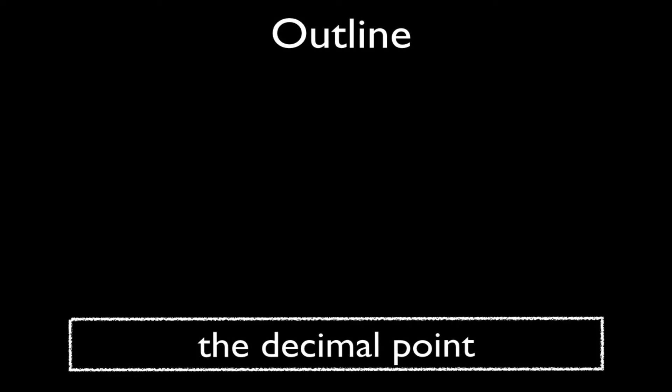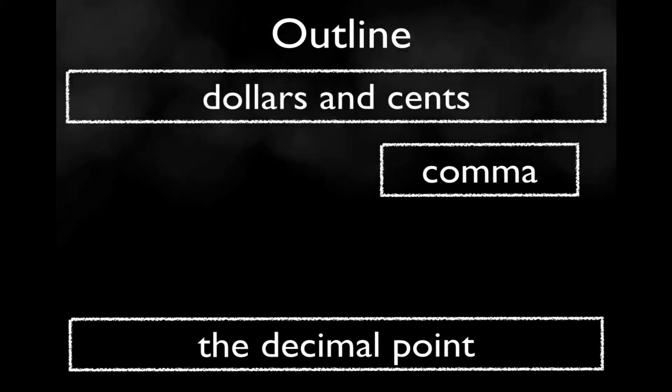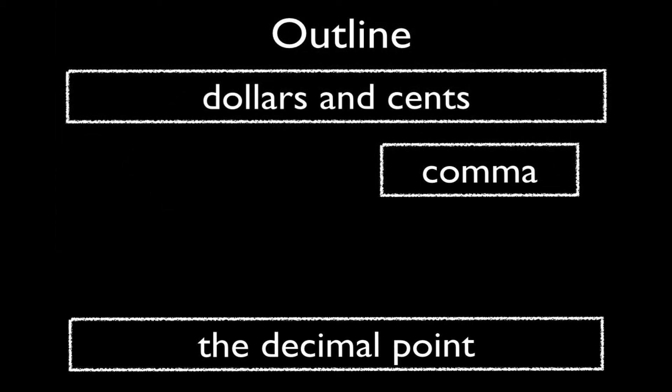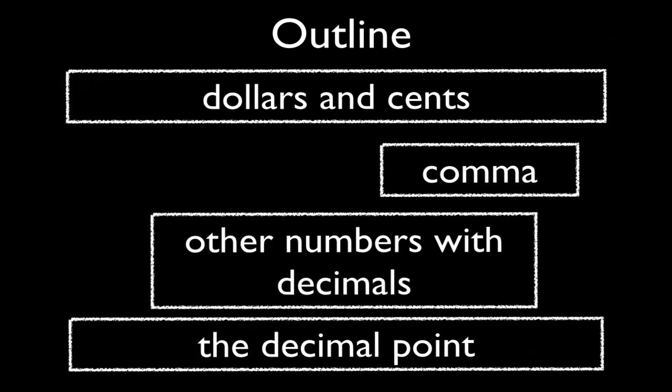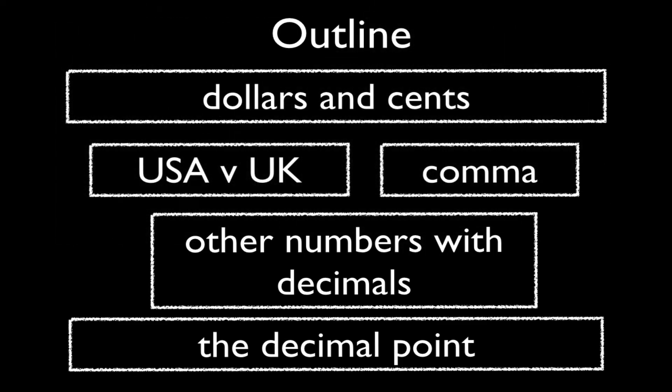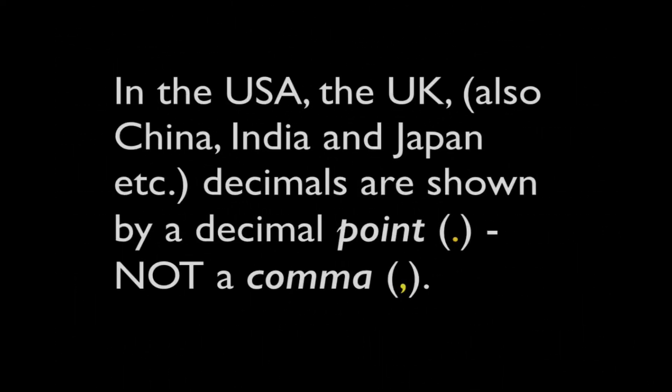We'll look at where we use the decimal point, where we use the comma, how we write and talk about money and dollars and cents. We'll look at numbers other than money and how we use decimals with them, and we'll look at some differences between American and British English. So let's get started.